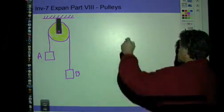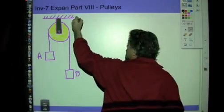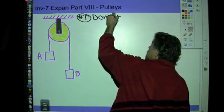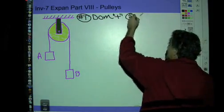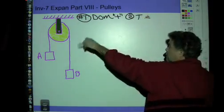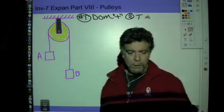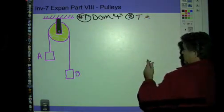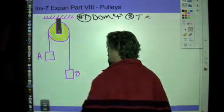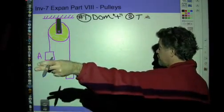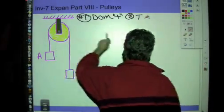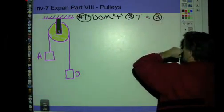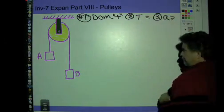Rule number one is that DOM is always positive. Rule number two is the tension is always equal throughout the rope. It's per rope. If you have a complex pulley system with five ropes, then in each rope the tension is the same throughout. As long as we're saying that's a massless pulley, and Austin would call that a Protestant pulley, then we don't have to worry about tension.